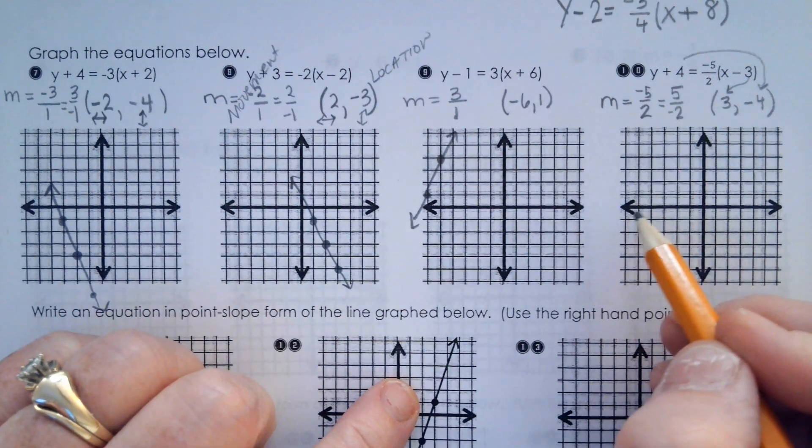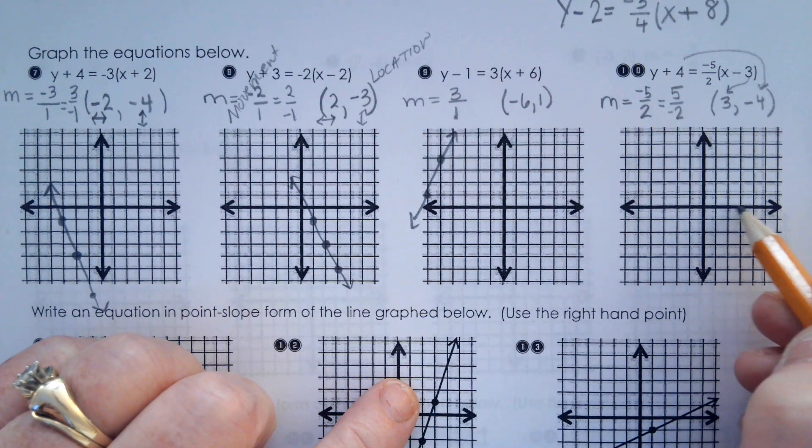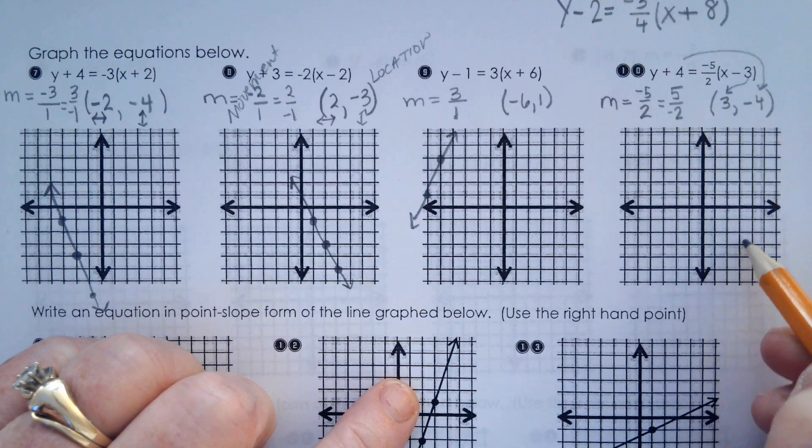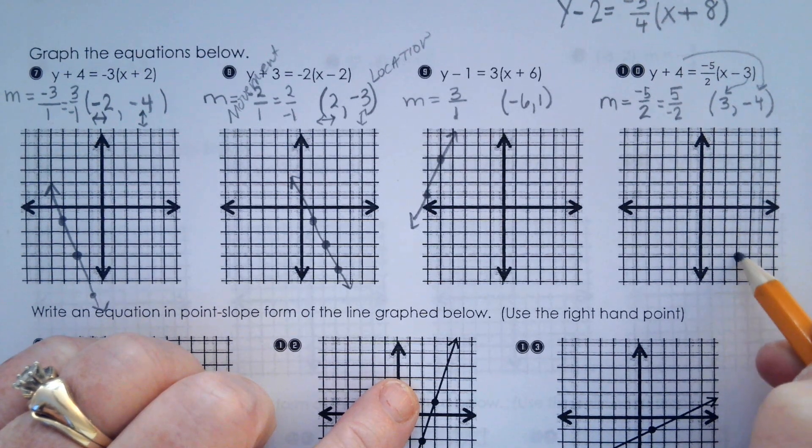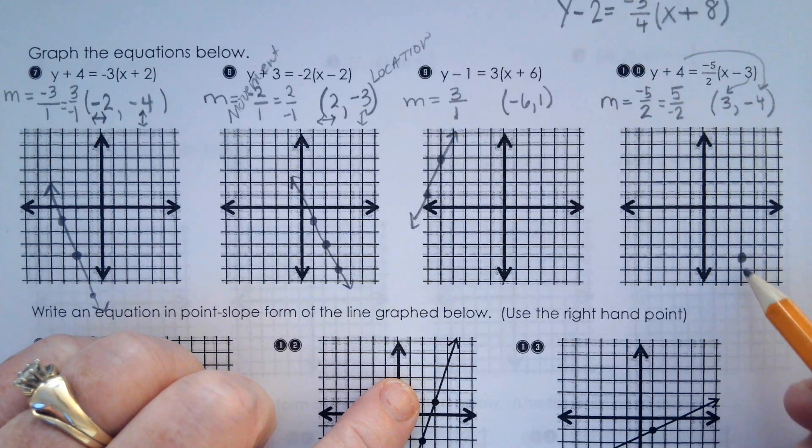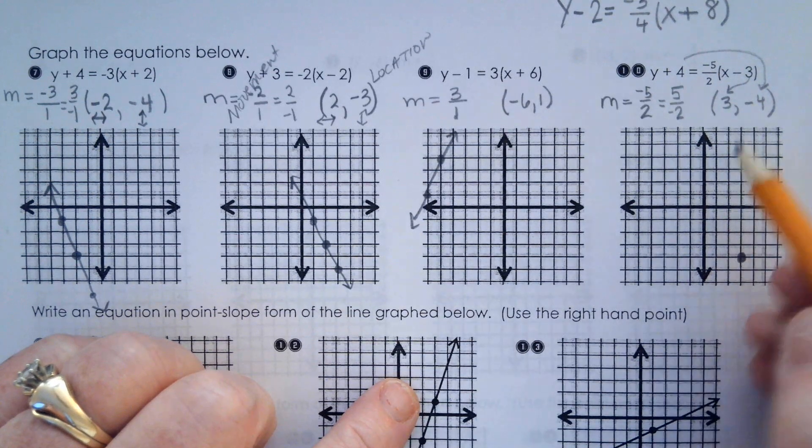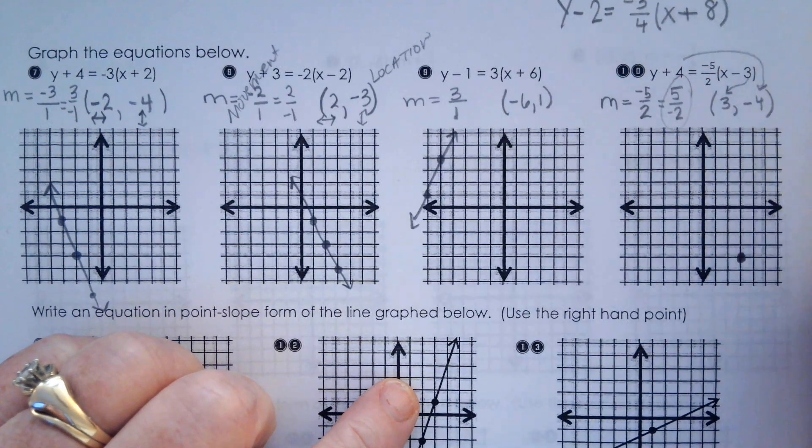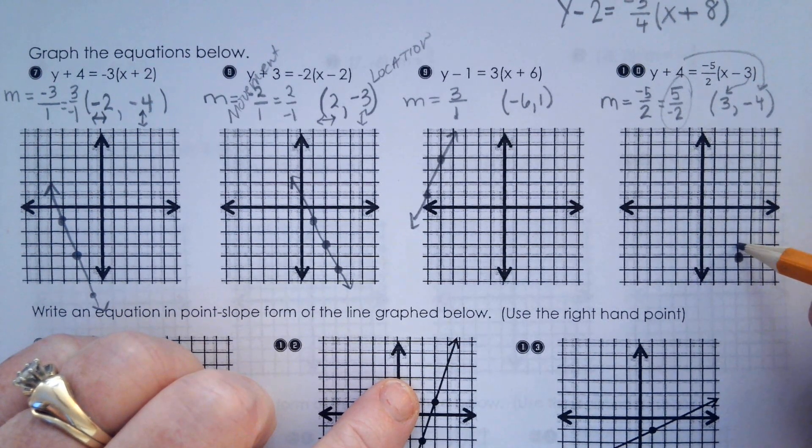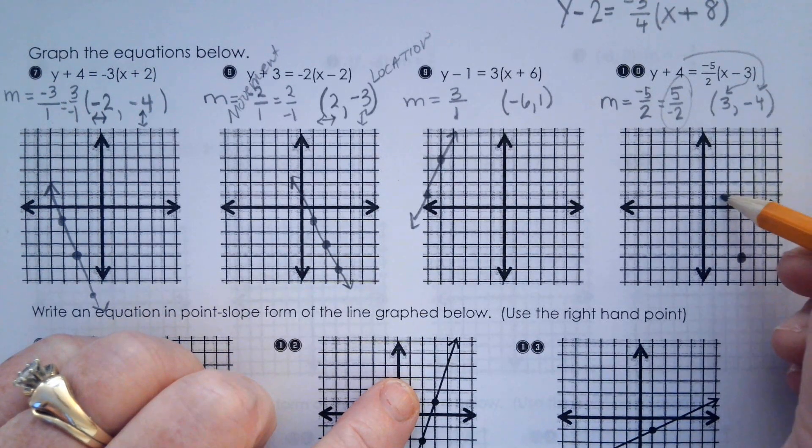Where did you go to graph this? And then you applied the slope. Would it be feasible to go down 5 and over 2 and be off the graph? So we're going to use this version of the slope where we go up 5 and back 2.